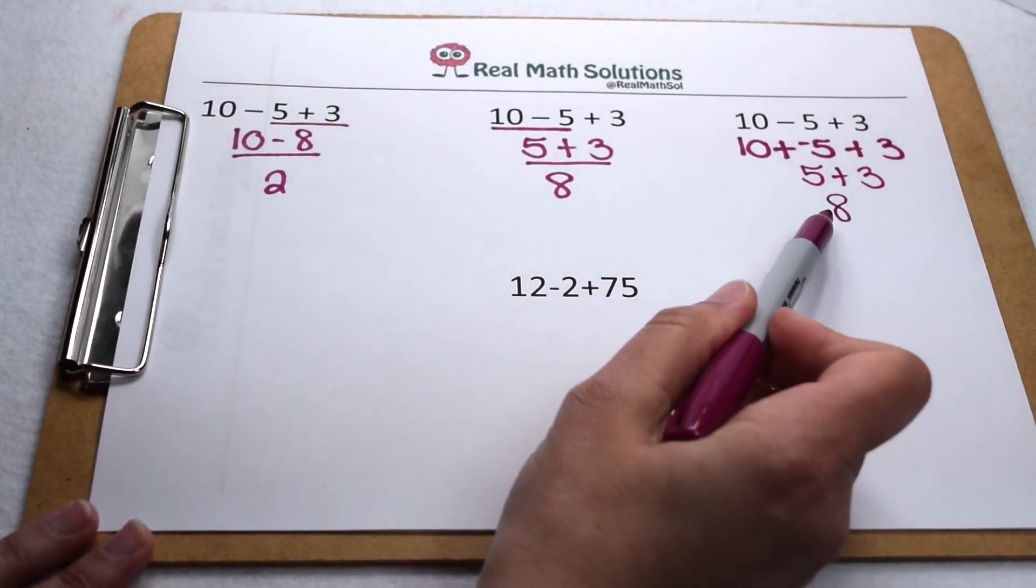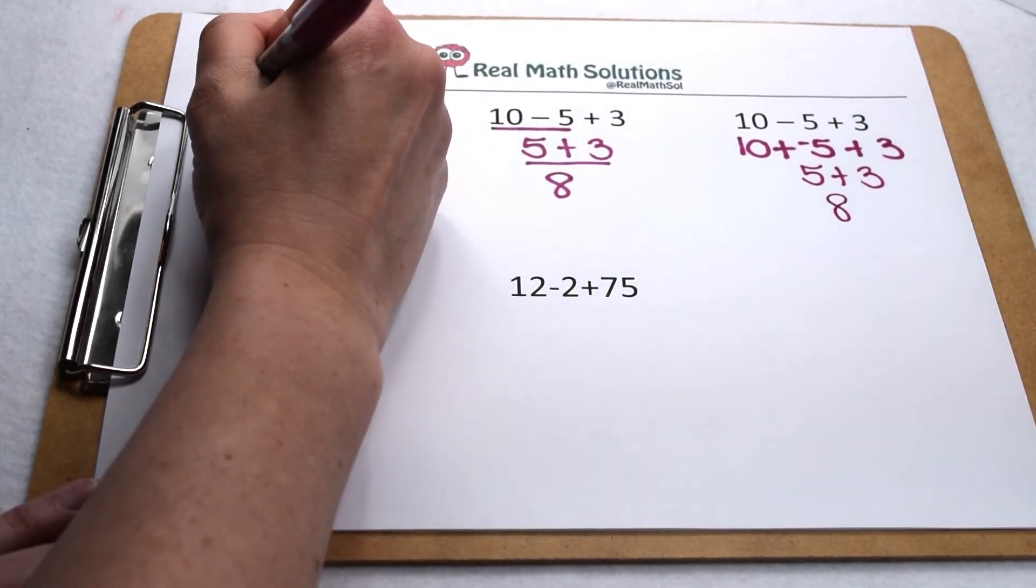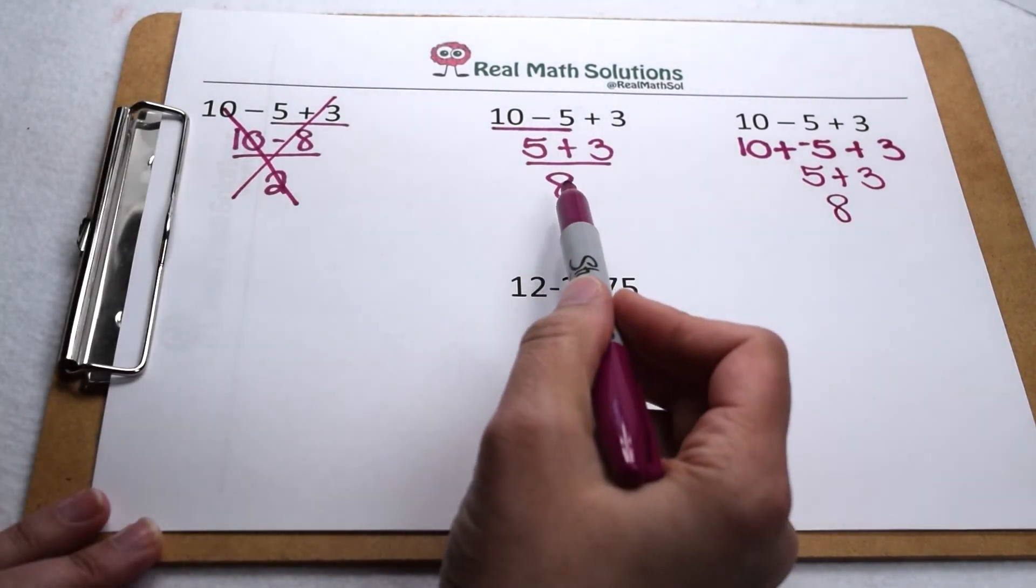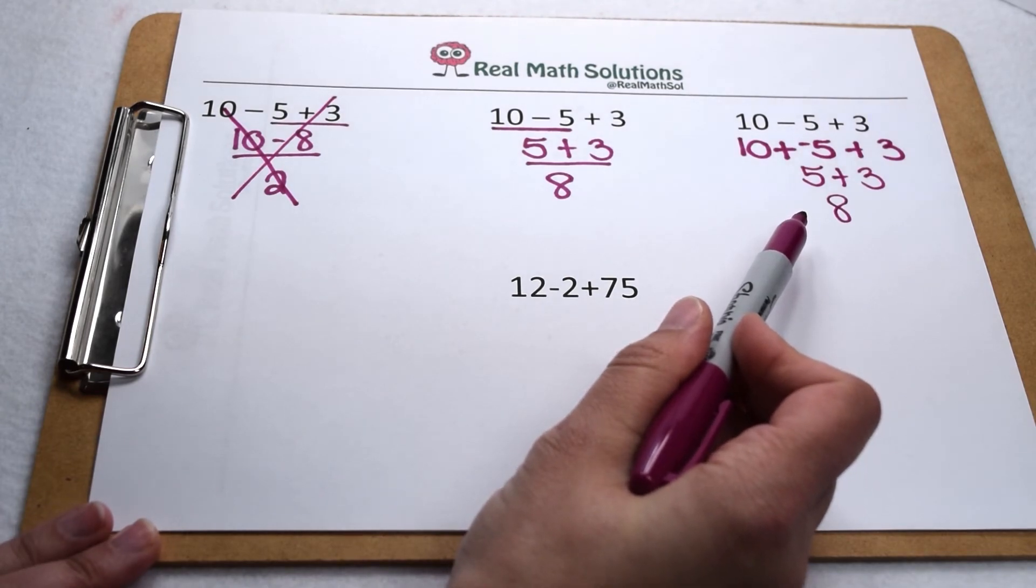We notice adding the opposite gives us the same result as working from left to right, and the one that truly did adding before subtracting is different. So when we work through our order of operations, addition and subtraction get worked left to right because of that adding the opposite principle.